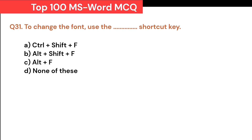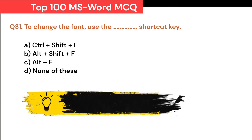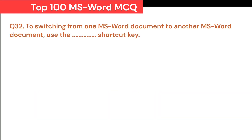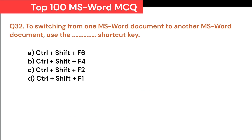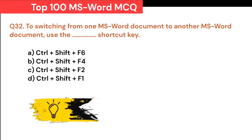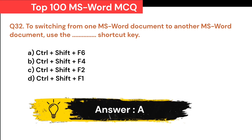A. Ctrl+Shift+F. B. Alt+Shift+F. C. Alt+F. D. None of these. Correct answer is A. Ctrl+Shift+F. To switch from one MS Word document to another, use the Dash shortcut key: A. Ctrl+Shift+F6. B. Ctrl+Shift+F4. C. Ctrl+Shift+F2. D. Ctrl+Shift+F1. Correct answer is A. Ctrl+Shift+F6.